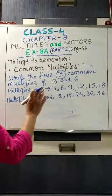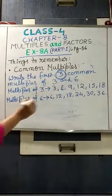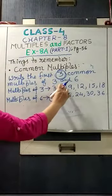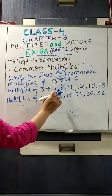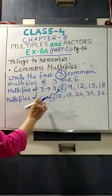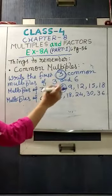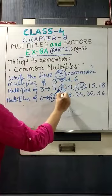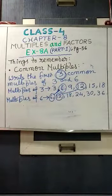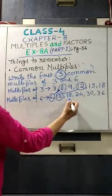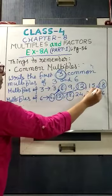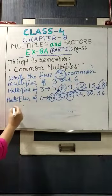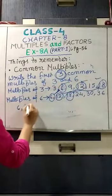Now find the first three common multiples. 6 appears in both lists — so 6 is the first common multiple. 12 also appears in both — so 12 is the second common multiple. 18 also appears in both — so 18 is the third common multiple. Therefore, the first three common multiples of 3 and 6 are 6, 12, and 18.